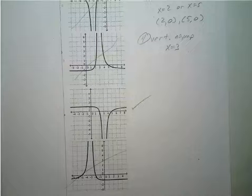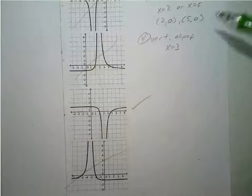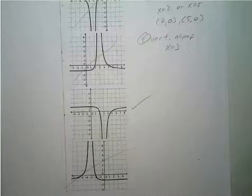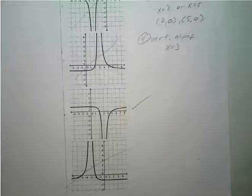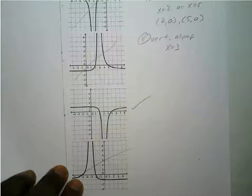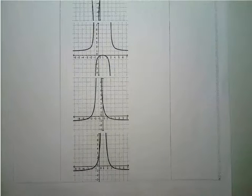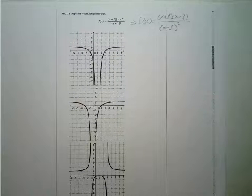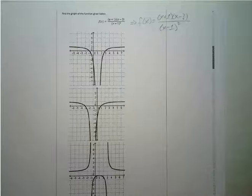We were able to identify the graph of f of x equals x minus 2 times x minus 5 over x minus 3 squared just by using those steps. You can go in whatever order you like — this is just a process that helps until you figure out your own way. Now for f of x equals x plus 1 times x minus 3 over x minus 1 squared, which is already factored.